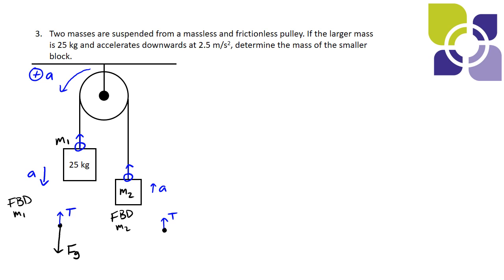Now we know that this smaller block is accelerating upwards. It's lighter than mass 2 so the force of gravity has to be smaller than the force of gravity acting on mass 1 but it also has to be smaller than the tension so that the net force on mass 2 is upwards.